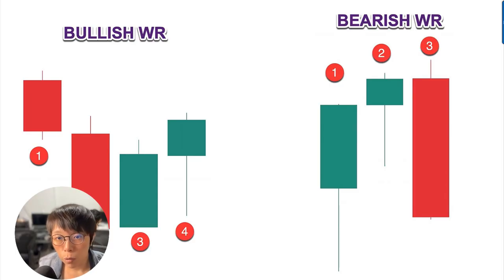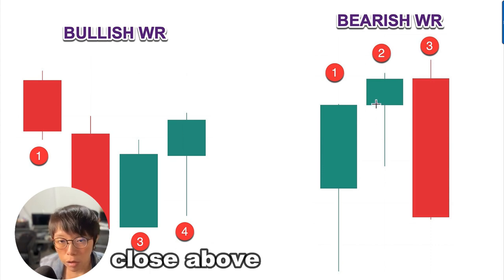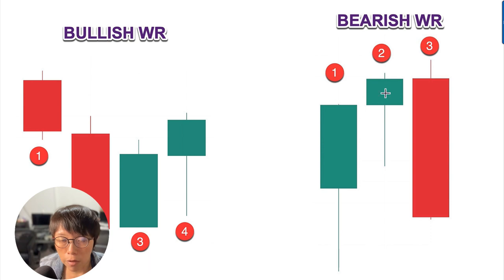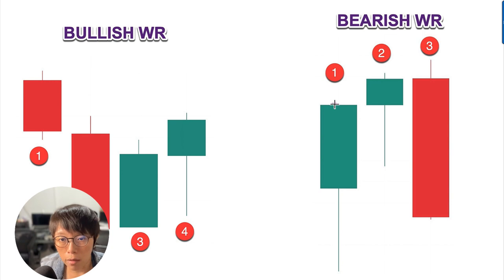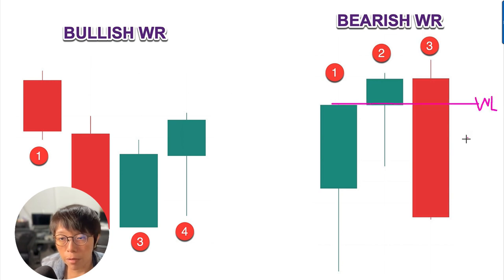So first, there will be a minimum of two candles in the wash and rinse pattern. First, focus here — we have candle number two. This is a candle that closes above the previous high. So if it closes above the previous high, you are able to draw in the wash line at the high of candle one. So here is the wash line — I'm going to mark this as WL, which is wash line.